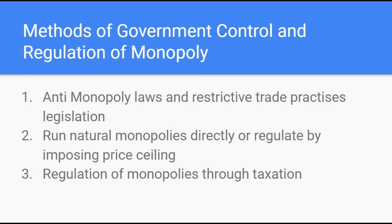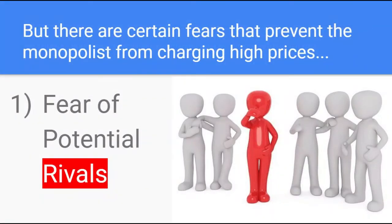Monopolies can also be regulated through taxes, but it's not always the case that monopolies charge high prices when unregulated, because there are certain fears that prevent the monopolist from doing so. The first is the fear of potential rivals. The fear of potential competitors prevents a monopolist from charging very high prices. If the monopolist sets a very high price, he's going to earn large supernormal profits, and attracted by these monopoly profits, new competitors may enter the market — and the monopolist doesn't want that. So he'd rather charge a reasonable price and earn lesser supernormal profits than attract competitors.